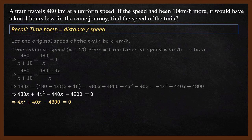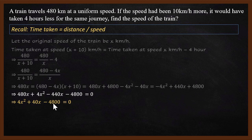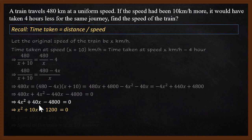This is a quadratic equation. Every term is a multiple of 4, so we divide throughout by 4, giving x squared plus 10x minus 1200 equals 0. Now we factorize. The factors are 40 and minus 30, so we split 10x into 40x minus 30x.